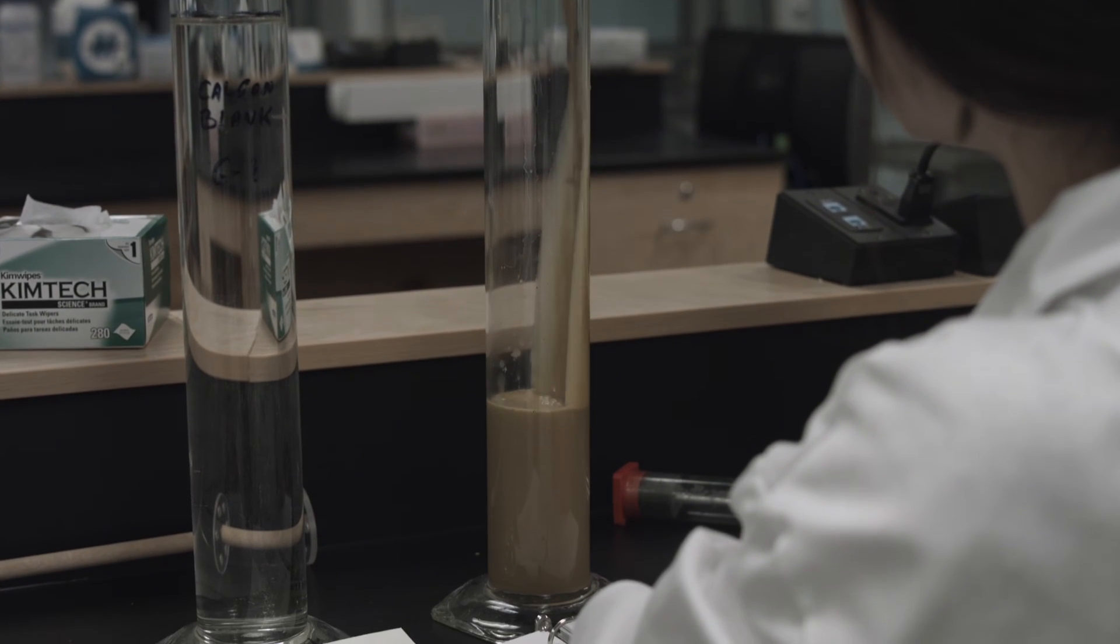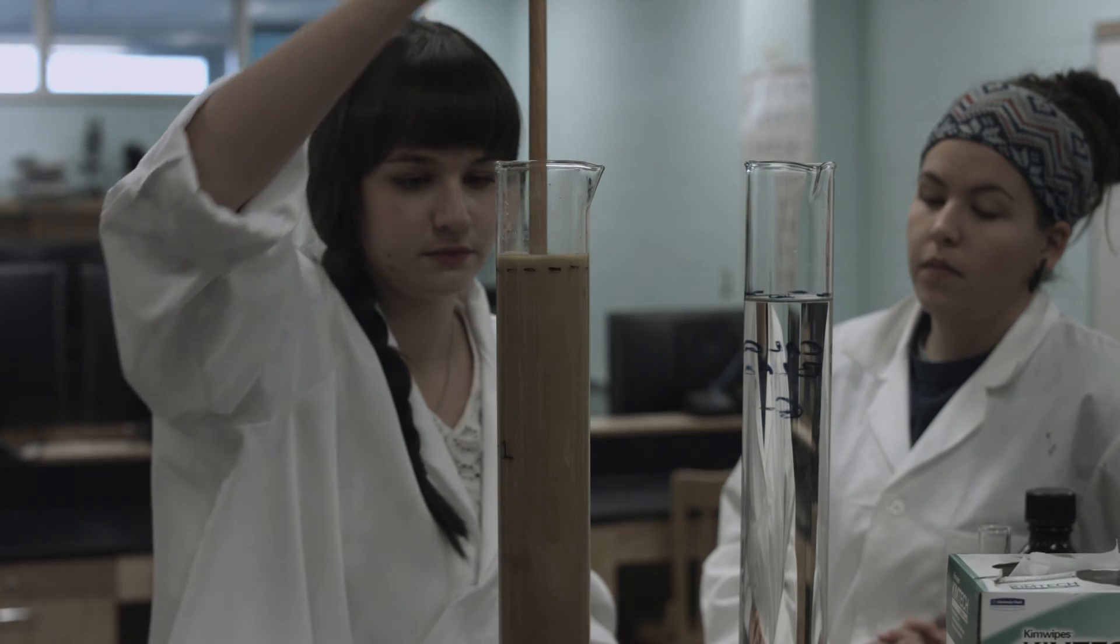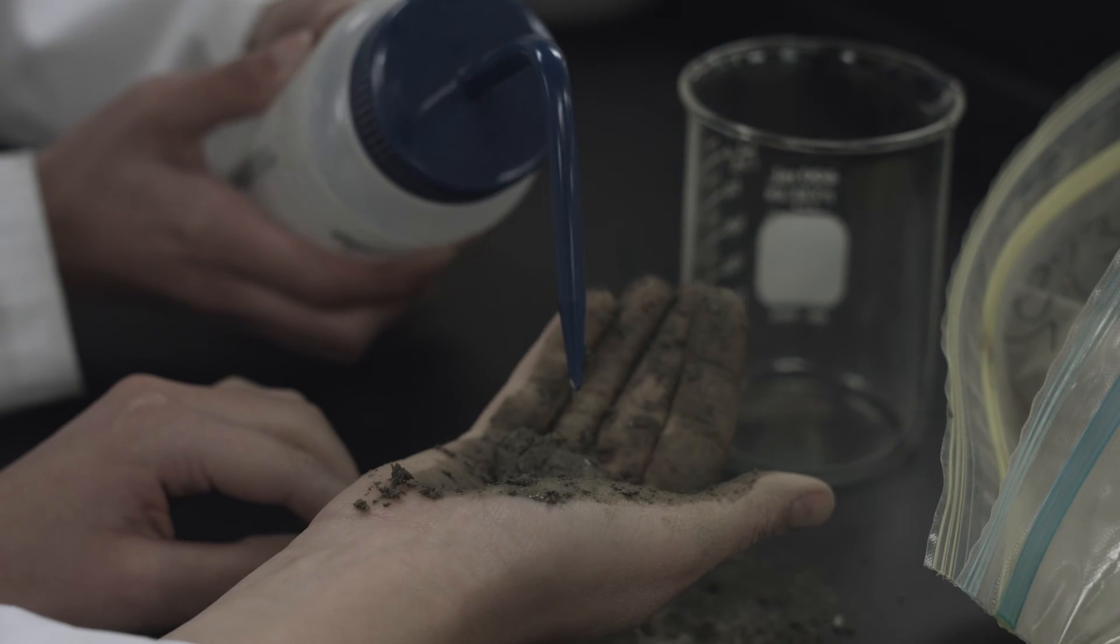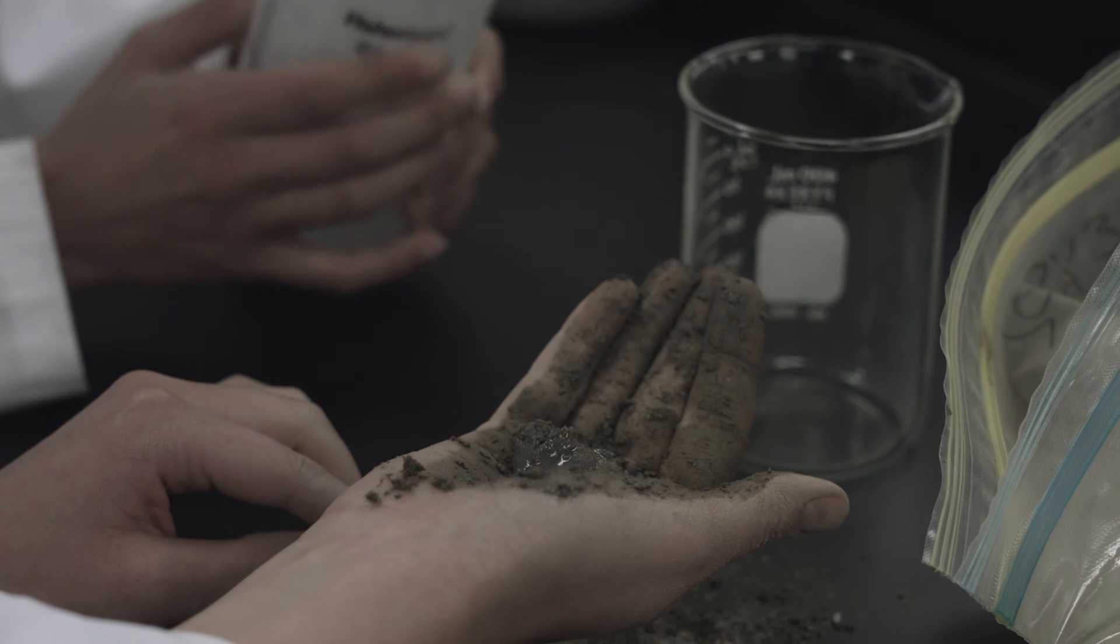For the general science degree program, you have the option of choosing three out of five fields: biology, chemistry, math, earth science, and physics.